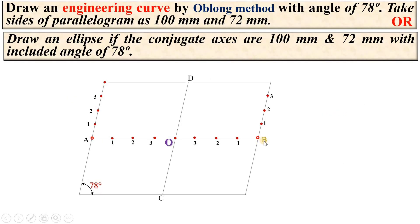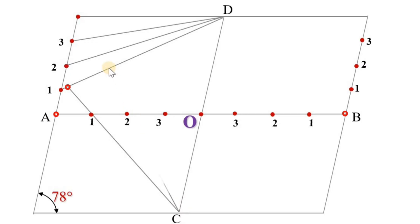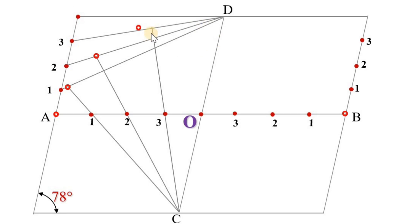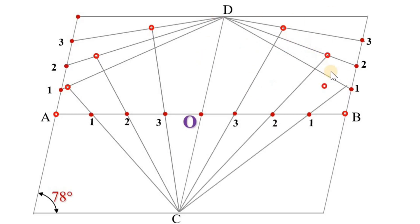You can follow this numbering pattern with respect to point B as well. Now join D1, D2, and D3. Next, join C1 and extend it up to D1 — you can mark the intersection point here. Similarly, join C2 and extend it up to D2 to get the intersection point. Mark it. Next, join C3 and extend it up to D3 to get the intersection point. Similarly, on the other side of CD, you will get the different intersection points.